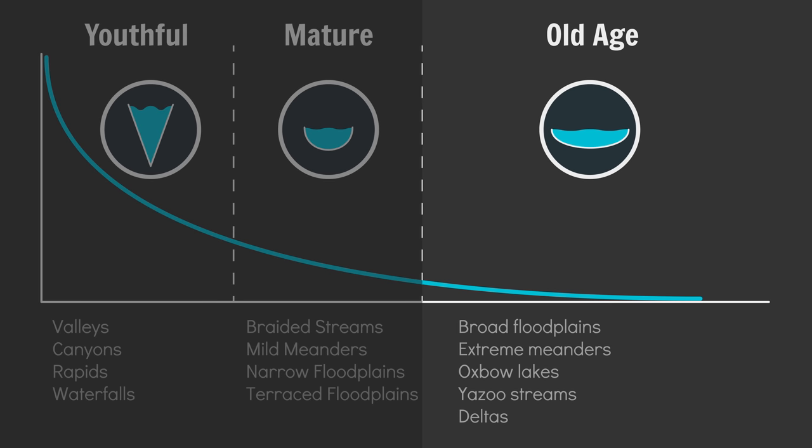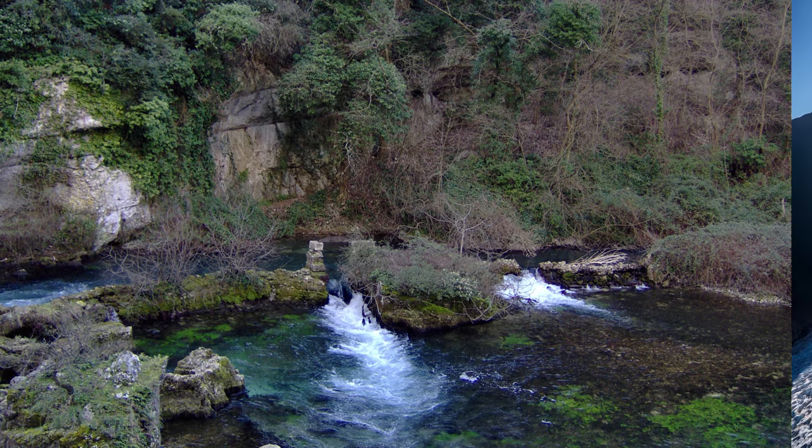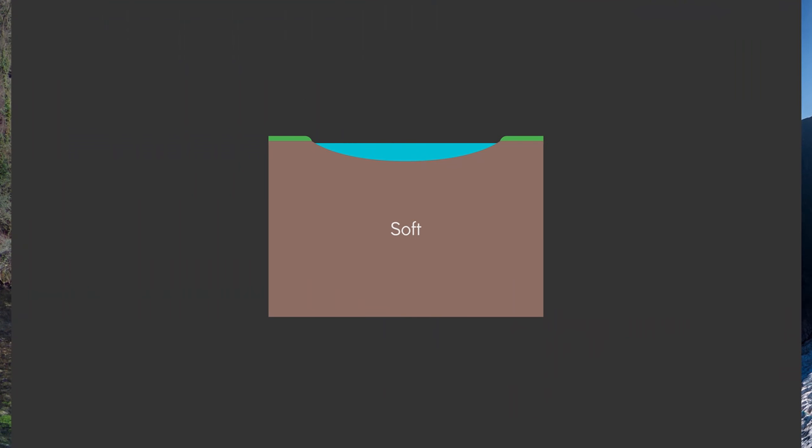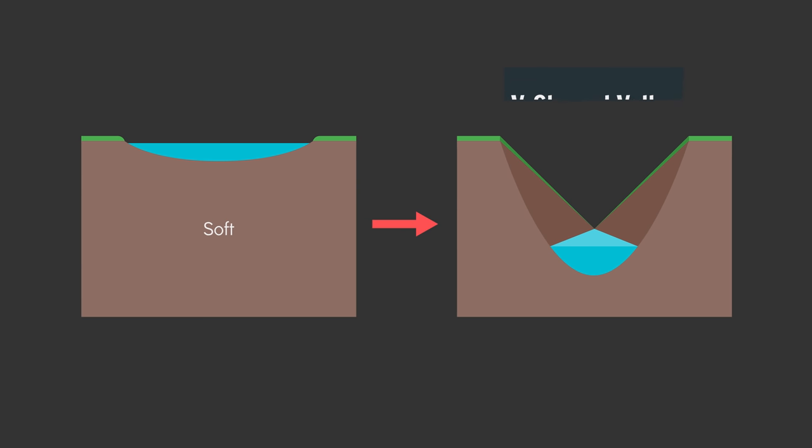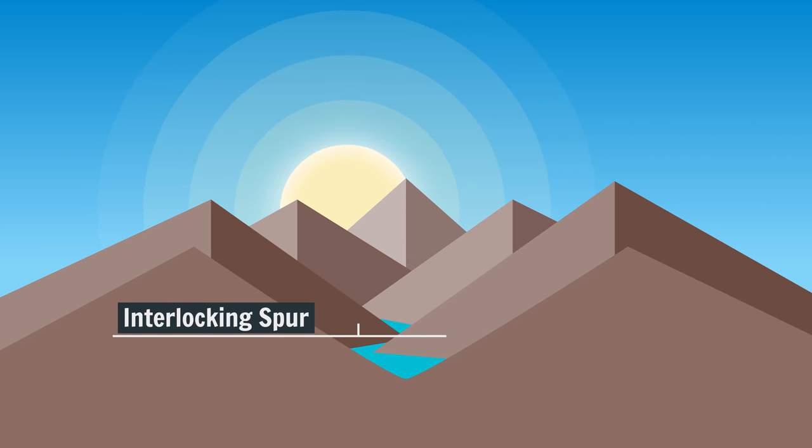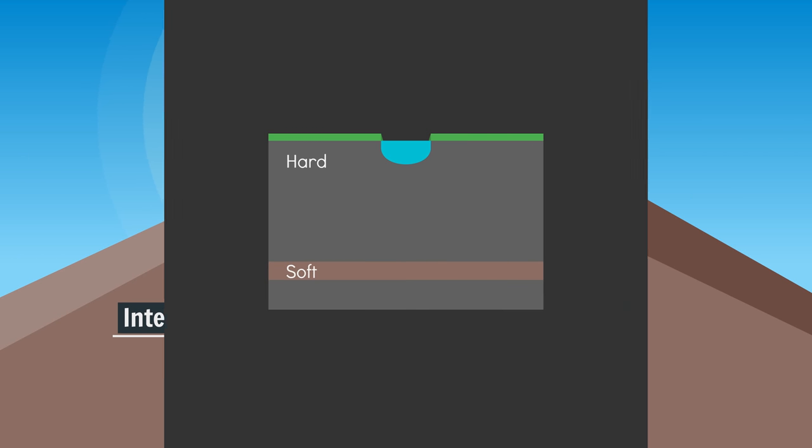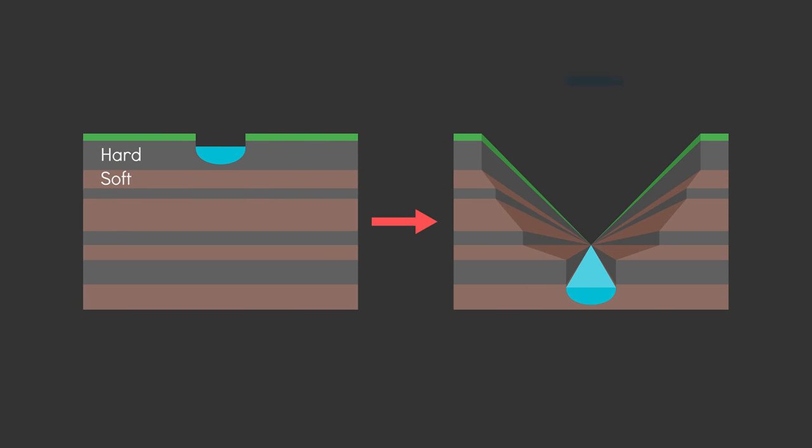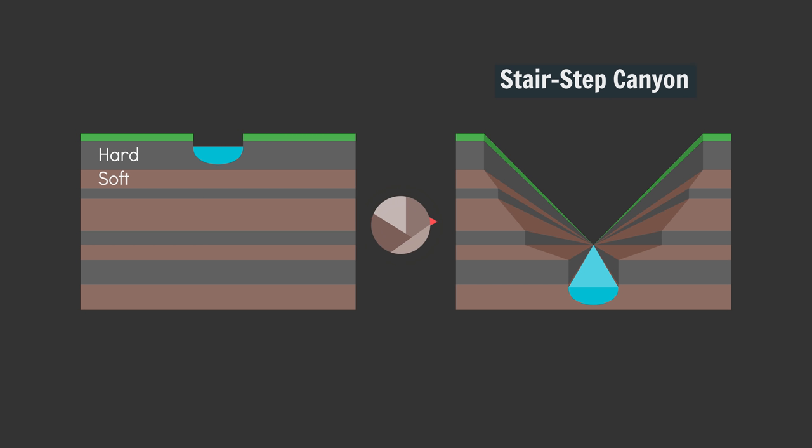So a river will begin at a source, usually a mountain spring, or meltwater from a snowfield or glacier. If the water passes over relatively soft underlying rock, the fast-flowing river will carve out a v-shaped valley with interlocking spurs. If the rock is relatively hard, slot canyons will form. And if the rock alternates between hard and soft rock, expect stair-step canyons, like the Grand Canyon.